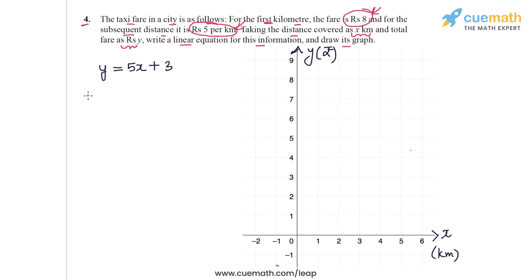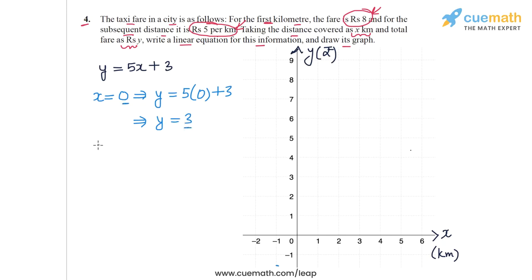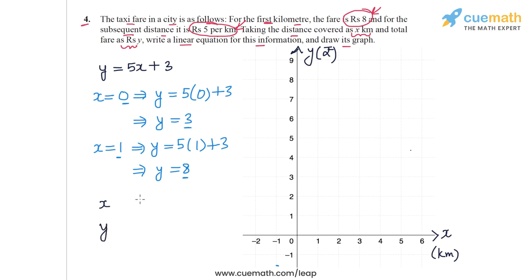To find two solutions, we give specific values to x. Let x equal 0: this gives y equals 5 times 0 plus 3, so y equals 3. The point (0, 3) is one solution. Now let x equal 1: this gives y equals 5 times 1 plus 3, so y equals 8. The point (1, 8) is another solution.